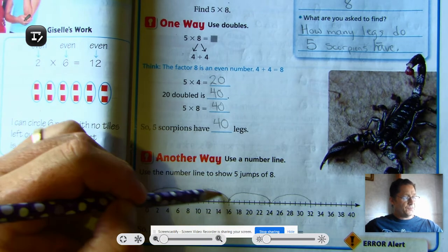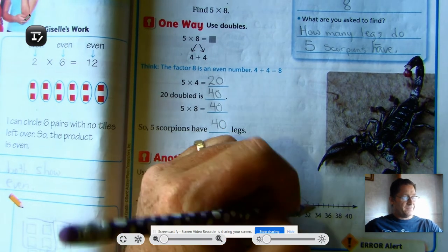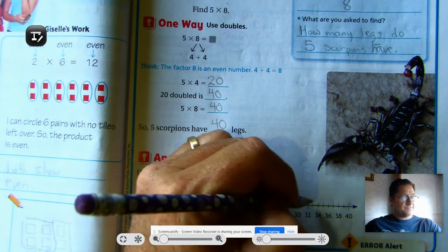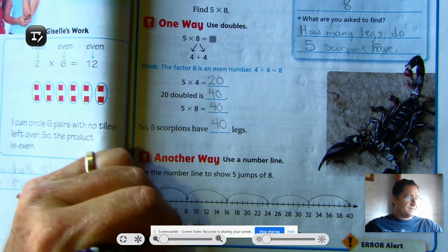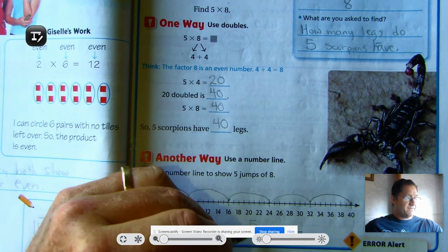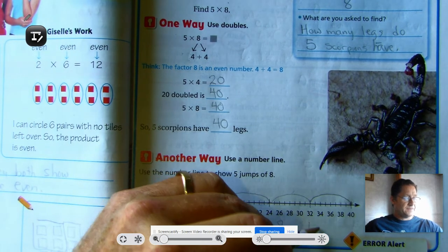So that's 1, 2, 3, 4 jumps. We need one more jump of 8. 2, 4, 6, 8. And so, 5 jumps of 8 is 40. 5 times 8 equals 40.